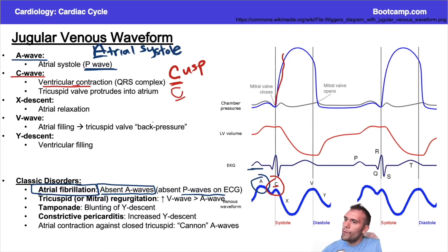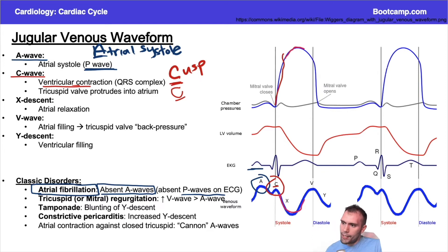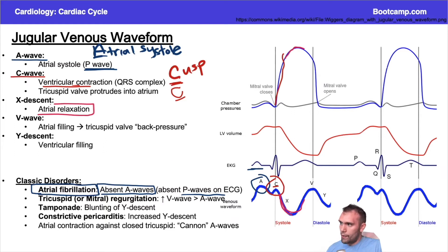After ventricular contraction, as pressure rises and more blood is ejected, the right atrial pressure comes down during systole. This allows the atrium to begin filling. That relaxation produces a lower pressure — and that's the X descent.